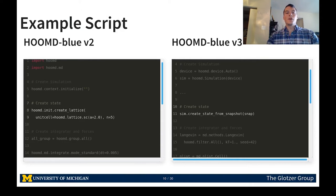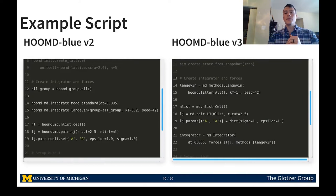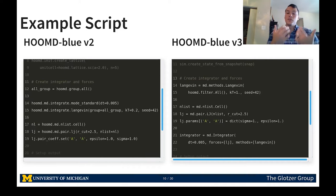We now create the system state. In version 2, we don't store a reference to the state object created. In version 3, we store the state directly in the simulation object already created. We then define the integrator, thermostat, and forces. In version 2, these operations automatically get added into the quasi-global state, while in version 3 we explicitly build an integrator object containing the forces and methods associated with our simulation.